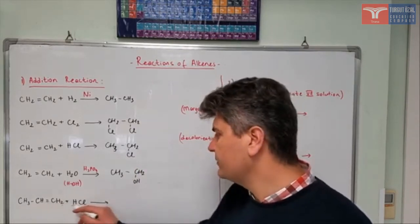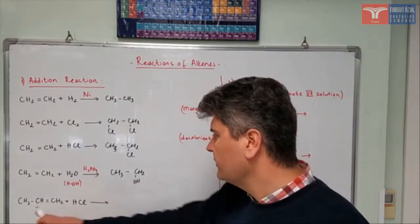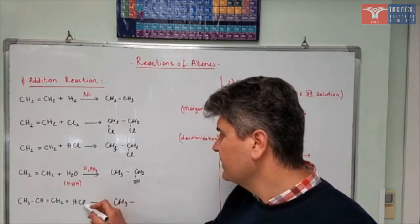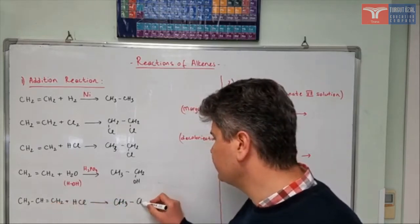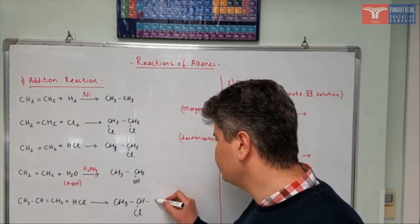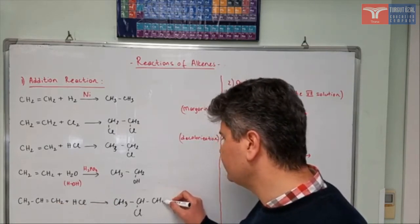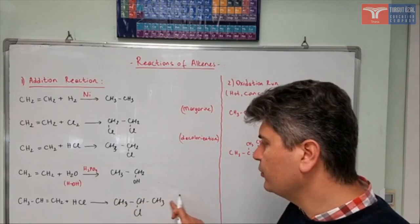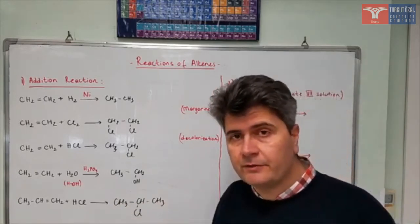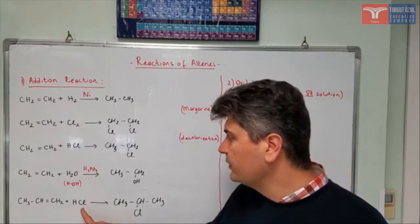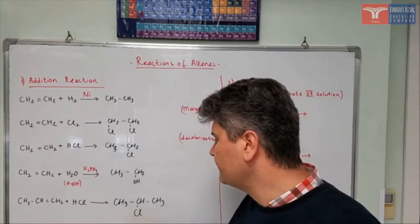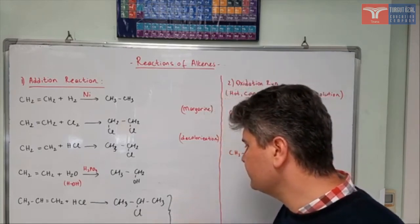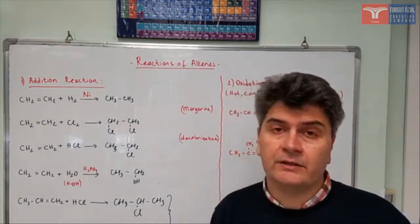Now let's look at the last reaction: propene reacting with hydrogen chloride. The CH₃ group is not going to change because it has no double bond. Let's say chlorine goes to the second carbon atom, so it becomes CH with chlorine, and the last carbon takes the other hydrogen — it was CH₂, it becomes CH₃. The product of the reaction is 2-chloropropane. But depending on the conditions, it's also possible to add chlorine to the first carbon atom, giving CH₃CH₂CH₂Cl. If you're interested in this further, you can check the Markovnikov and anti-Markovnikov rules.